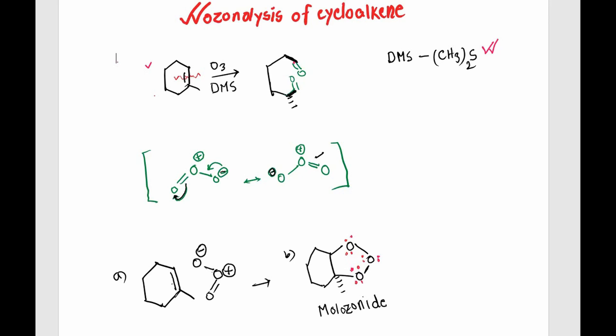Before going into any details, this is the resonance form of the ozone molecule where you can see that one of the oxygen atoms will have a positive formal charge and the other will have a negative formal charge, and these can resonate with each other to be either of these two forms.